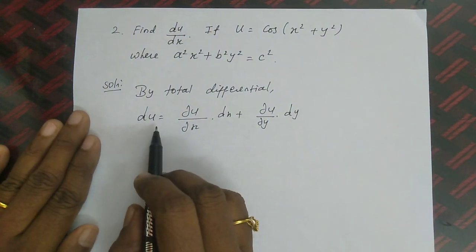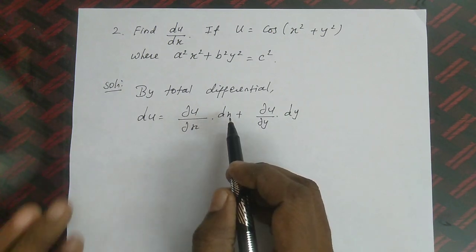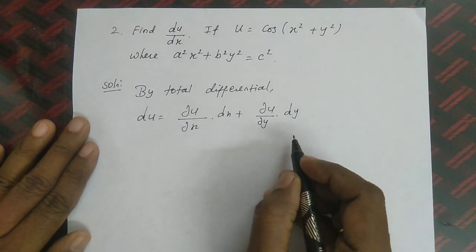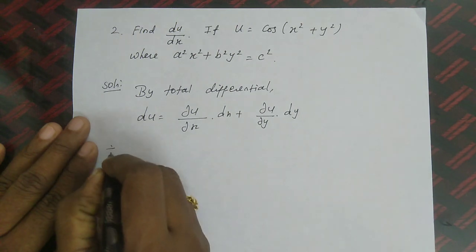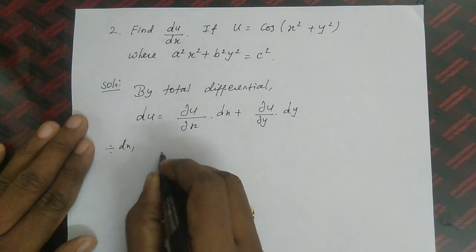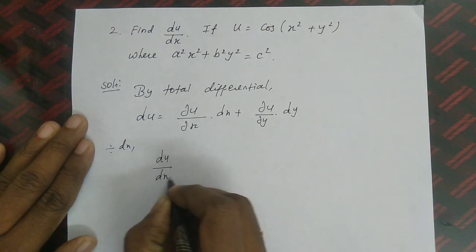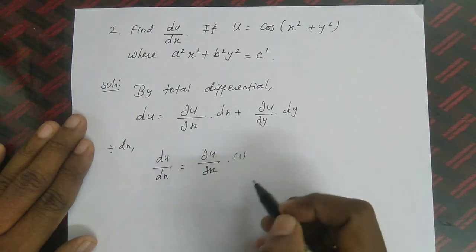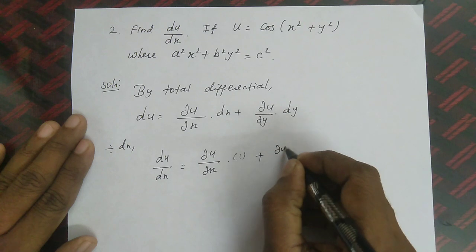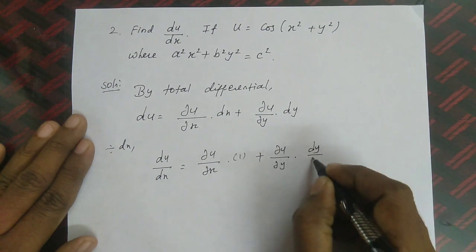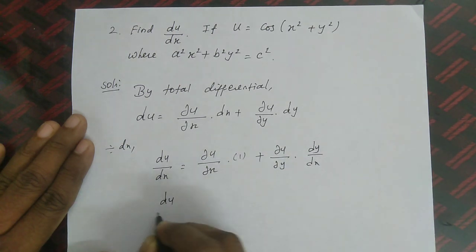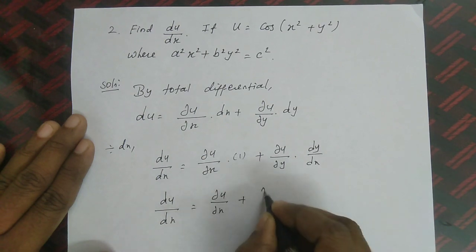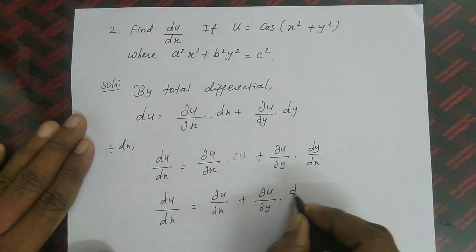By total differential, du = (∂u/∂x)dx + (∂u/∂y)dy. Dividing the whole equation by dx, we get du/dx = ∂u/∂x + (∂u/∂y)(dy/dx). Call this equation 1. In this equation we can find ∂u/∂x and ∂u/∂y from the given u, and we find dy/dx from the given constraint relation.